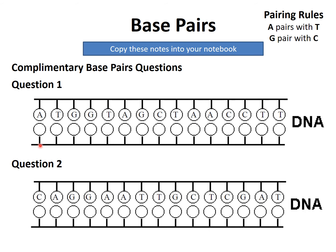To check your answers, the complementary strand should read: A with T, T with A, G with C, G with C, T with A, A with T, G with C, C with G, T with A, A with T, A with T, C with G, C with G, T with A, and T with A.